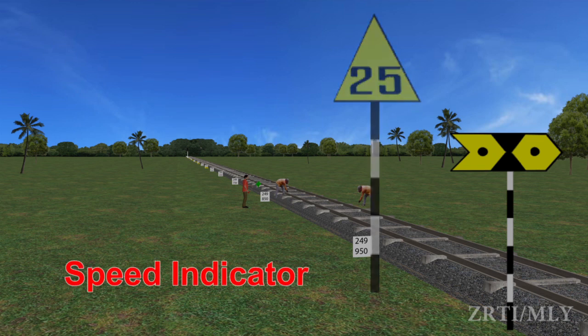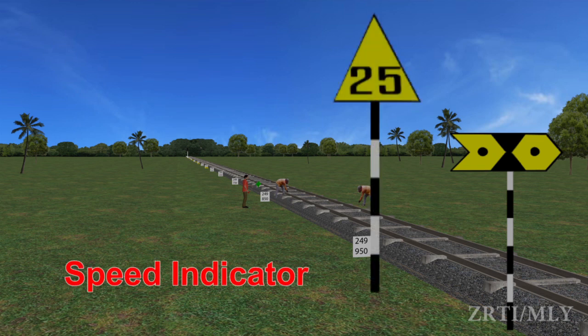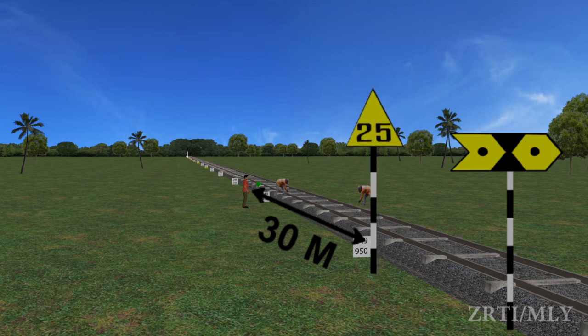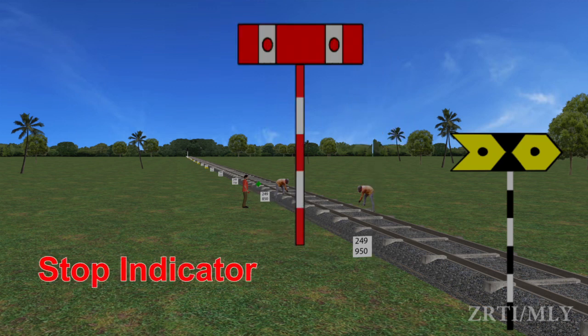Speed Indicator: This is an equilateral triangular board painted yellow with speed painted in black. It is provided for both permanent and temporary speed restrictions, and is placed at a distance of 30 meters from the work spot.